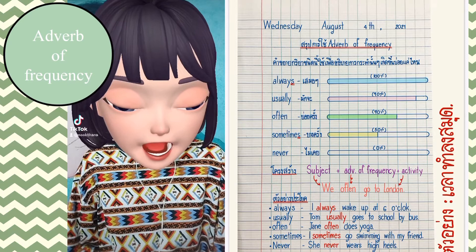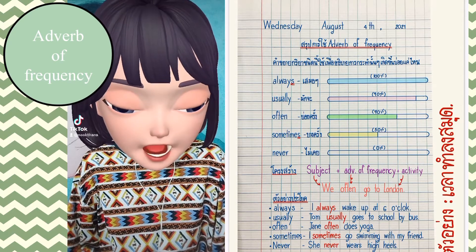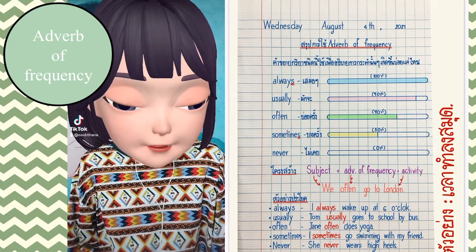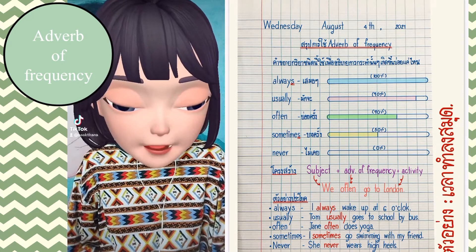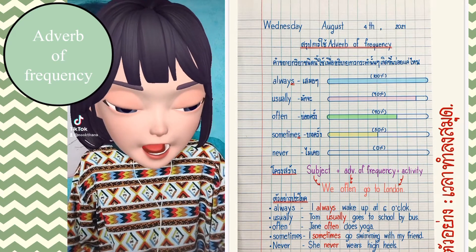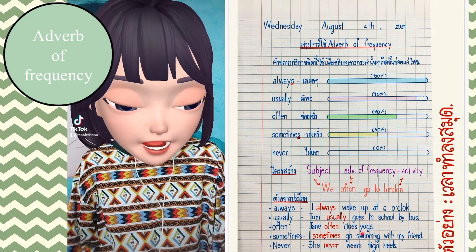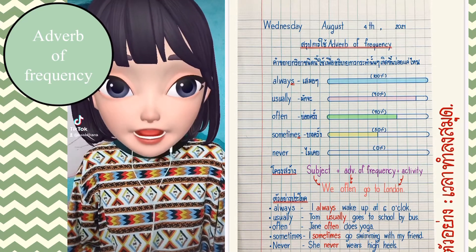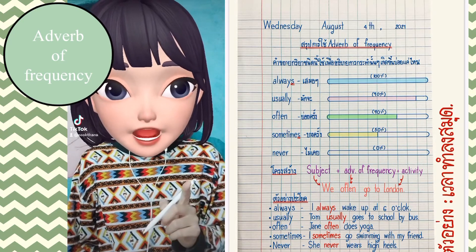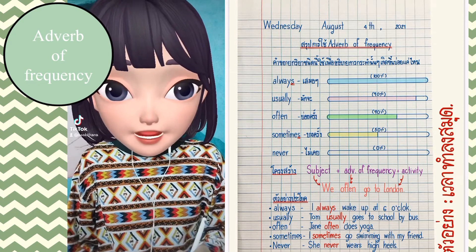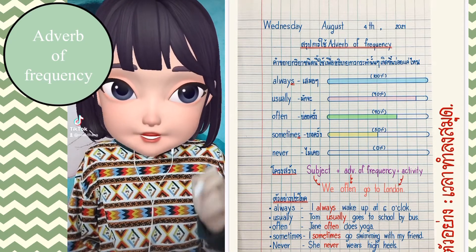นักเรียนสังเกตว่า ประธานที่เป็น I จะใช้ verb ตามปกติ แต่ประธานที่เป็น Tom, Jane, She — verb จะเติม S หรือ ES ข้างหลัง เรื่องนี้เกี่ยวกับ Present Simple เดี๋ยวคุณครูจะทบทวนให้อีกครั้งในครั้งหน้า